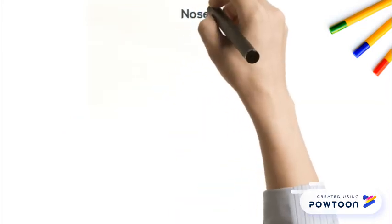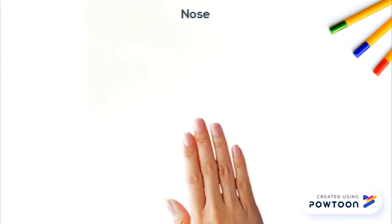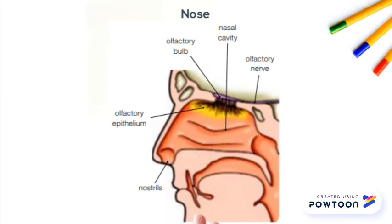Here is a picture of the nose where you can see the different parts: olfactory nerve, nasal cavity, olfactory bulb, olfactory epithelium, and nostrils.